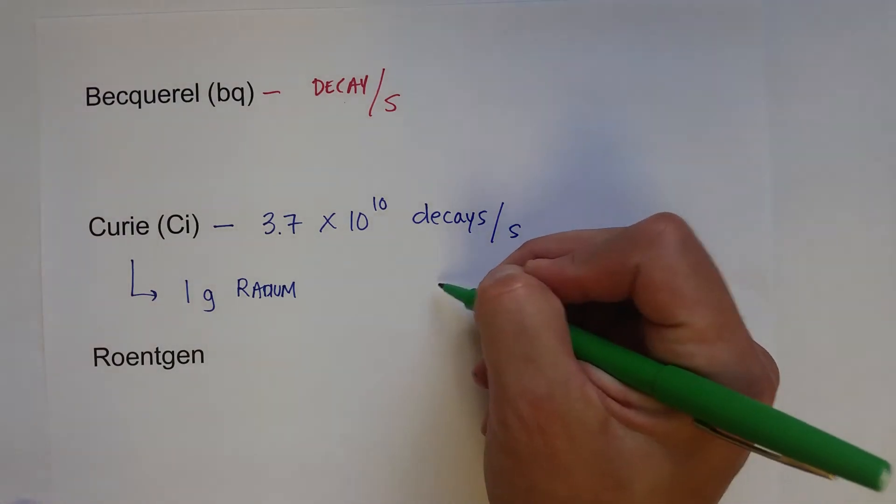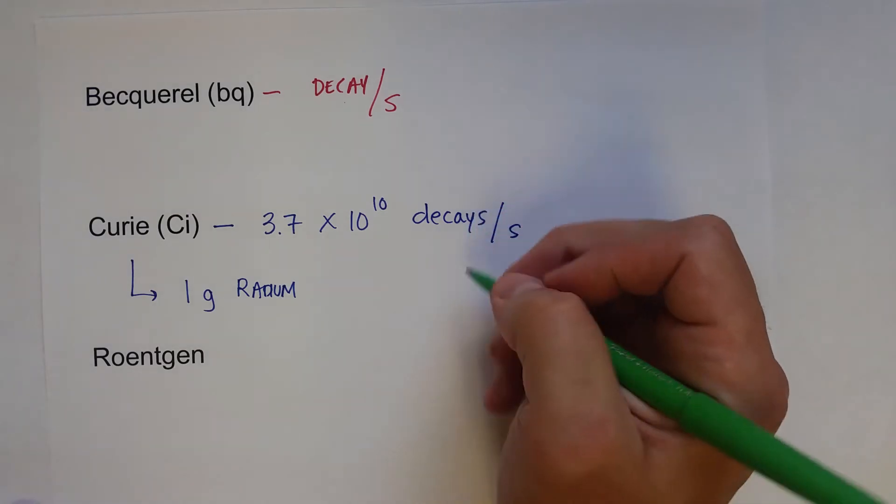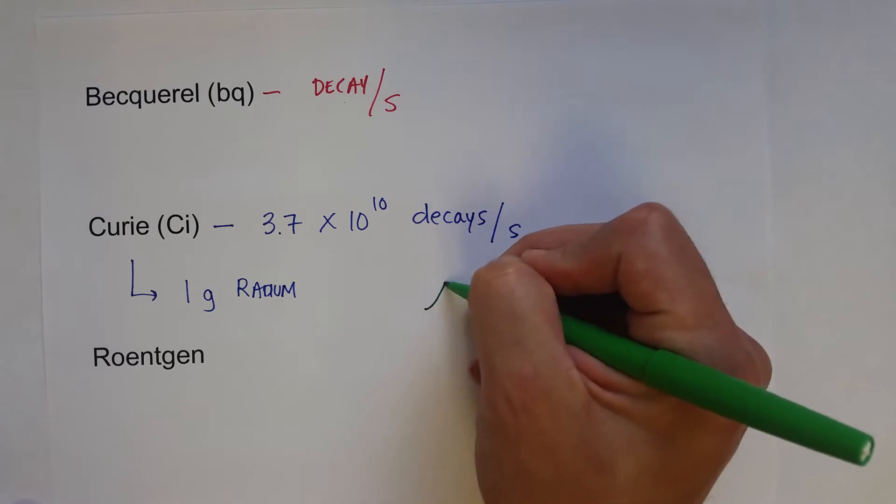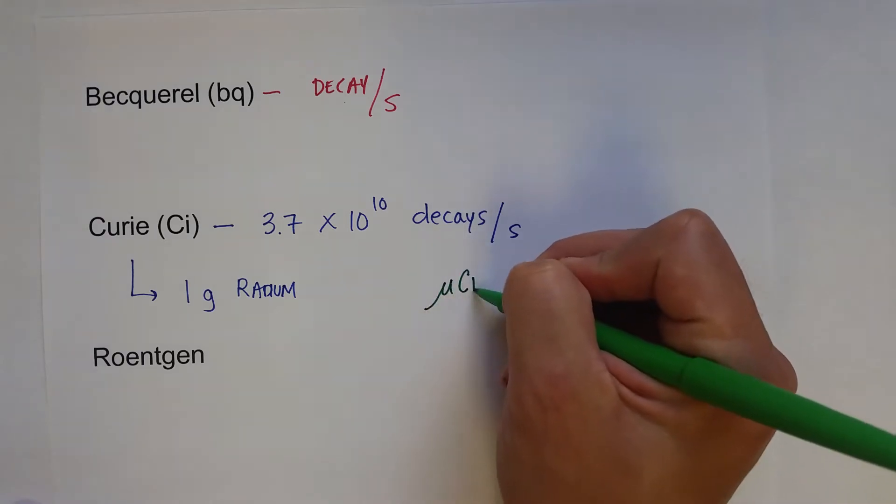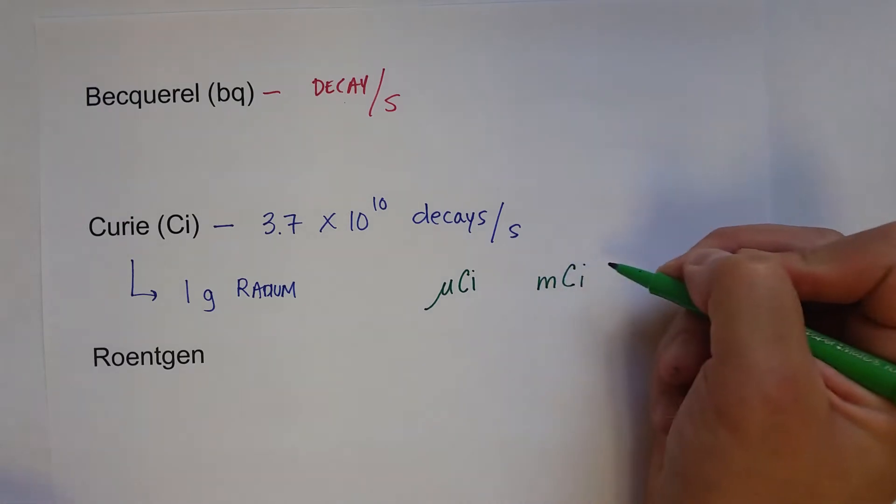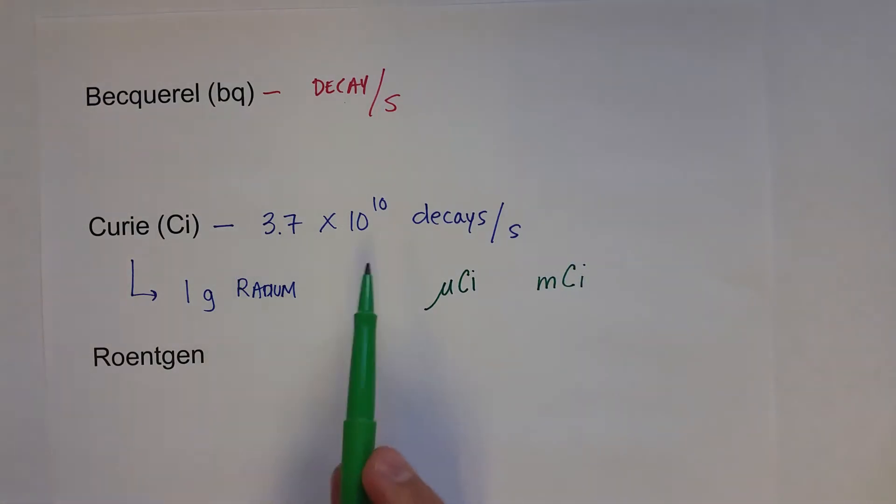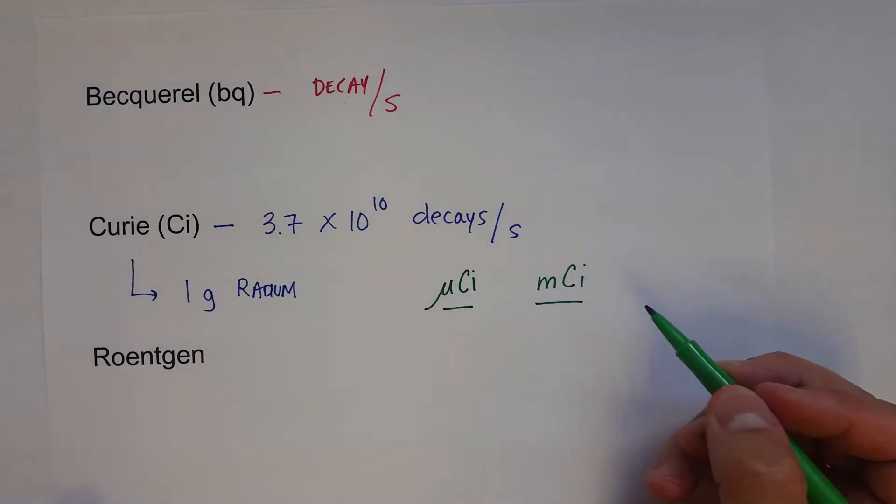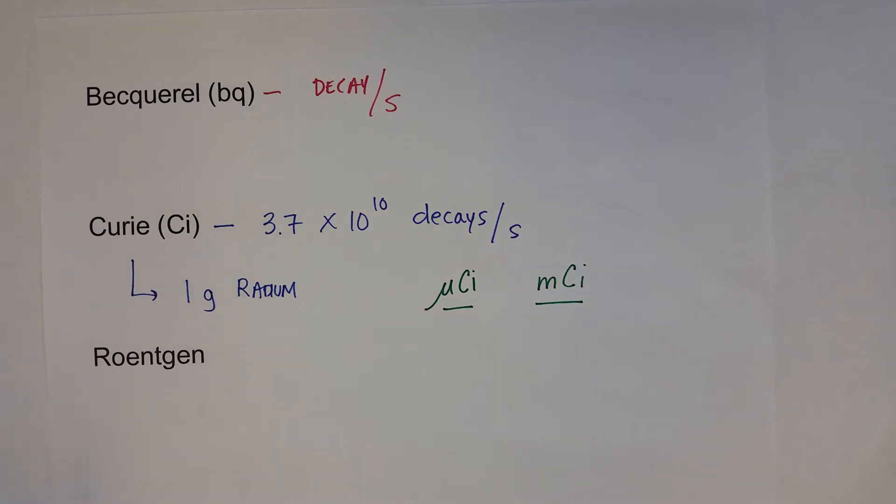Most radioactive substances that you come across in the healthcare field or in industry are on the order of a microcurie, or even a little bit higher, maybe a millicurie. Full curies, as you can see in the number of decays per second, is quite a bit of radiation. So a lot of times you'll see a prefix multiplier associated with the curie. Now the roentgen is a measure of an exposure to radiation, x-rays or gamma rays.